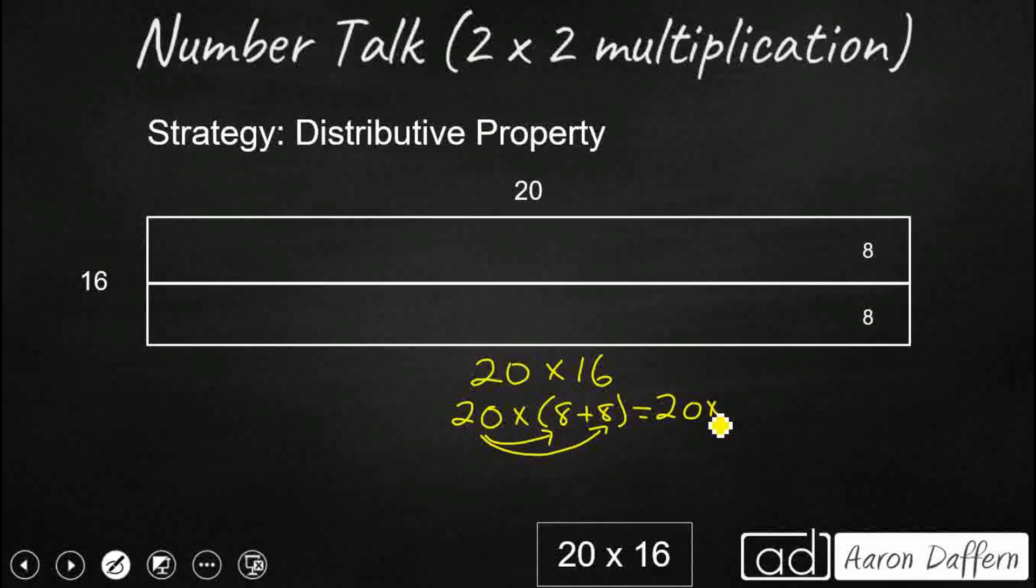So that's going to be 20 times 8. There's your 160. And then we're going to get another 20 times 8. And that's another 160. You add those two together, and guess what? We're always going to come up with 320. That's not changing in this video.